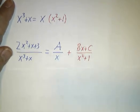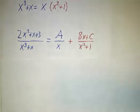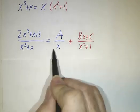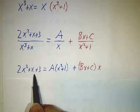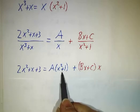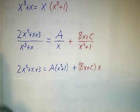So the way we figure out the constants is the same as before. We multiply through both sides by x squared plus x. And that gives us the numerator equals a times x squared plus 1 plus bx plus c times x.